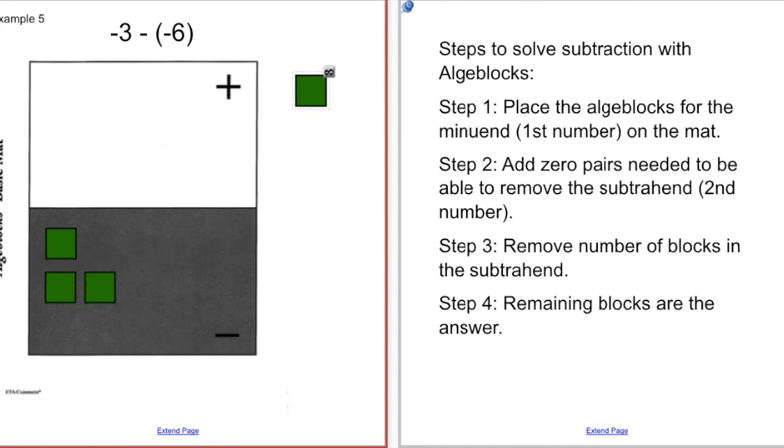Next, we have example number 5: negative 3 minus negative 6. So I start step 1 with my negative 3 on the mat. Now I don't have negative 6 to take away, so I'm going to add zero pairs to create that. Okay, so now I added 3 zero pairs. So now I'm able to take away negative 6. So that gives me the answer of positive 3. So negative 3 minus negative 6 equals 3.